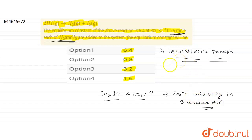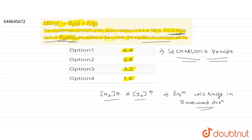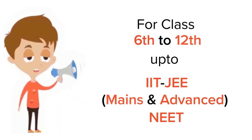There will be no effect on the value of the equilibrium constant. When we add product or reactant, or increase pressure, the equilibrium constant does not change — the system simply shifts to minimize the change. So the equilibrium constant remains 6.4, and option A is correct.